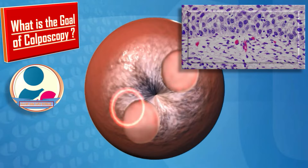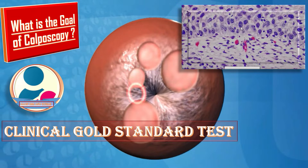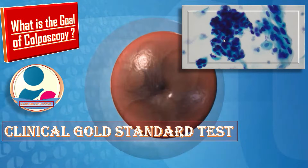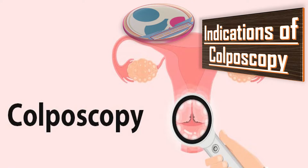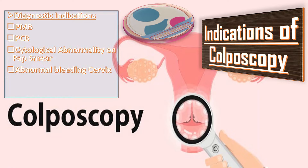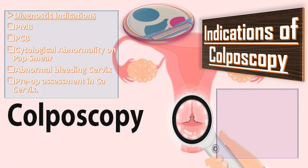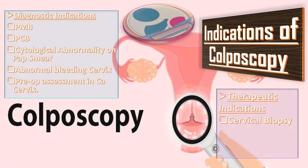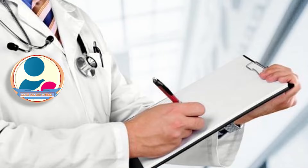Colposcopy is the clinical gold standard test for evaluation of patients with abnormal cervical cytology. Colposcopy is done for both diagnostic and therapeutic purposes. Diagnostic indications include postmenopausal bleeding, postcoital bleeding, cytological abnormality on pap smear, abnormal bleeding of the cervix, and preoperative assessment in early staging of carcinoma cervix. Therapeutic indications include direct visualization for cervical biopsy and follow-up in conservative management.